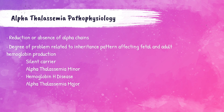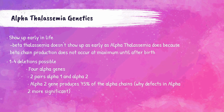Now let's move on to alpha thalassemias. Similar to beta thalassemias, alpha thalassemia causes a reduction or absence of the alpha chains of the hemoglobin molecule, and the degree of the problem is related to the inheritance pattern. The types are silent carrier, minor, hemoglobin H disease, and alpha thalassemia major. Alpha chains show up earlier than beta chains, so these thalassemias show up earlier in life. Remember, there are four alpha genes inherited as pairs, so there can be one to four deletions of alpha chains possible.